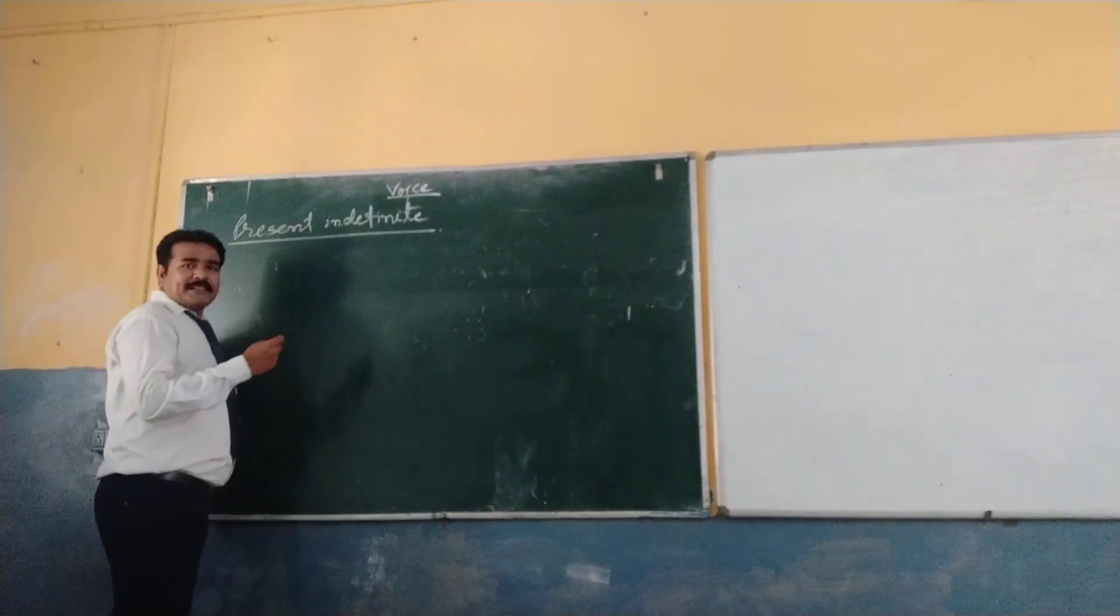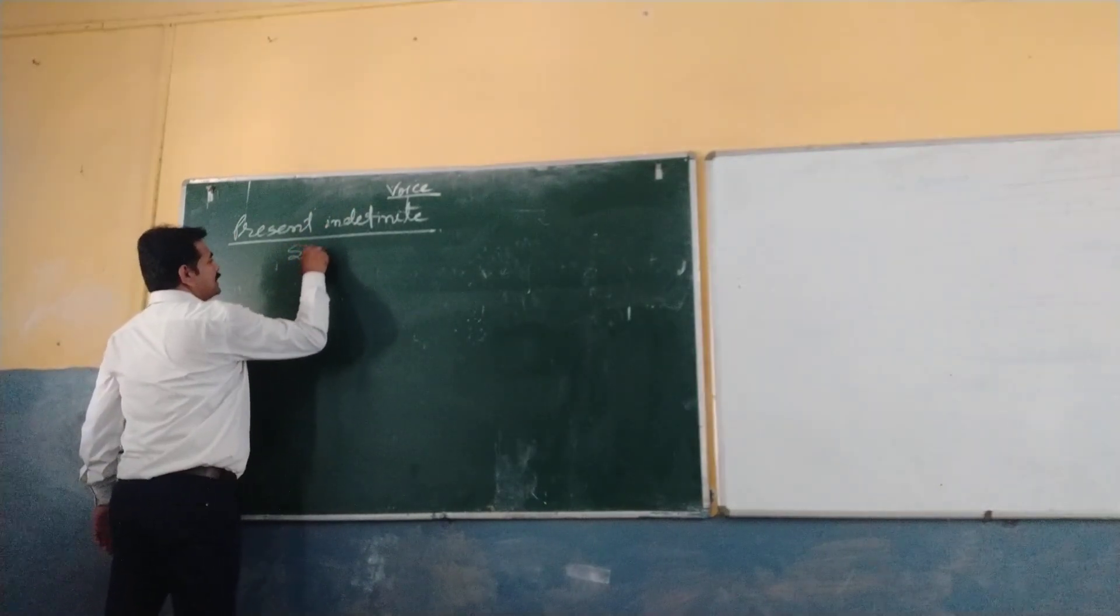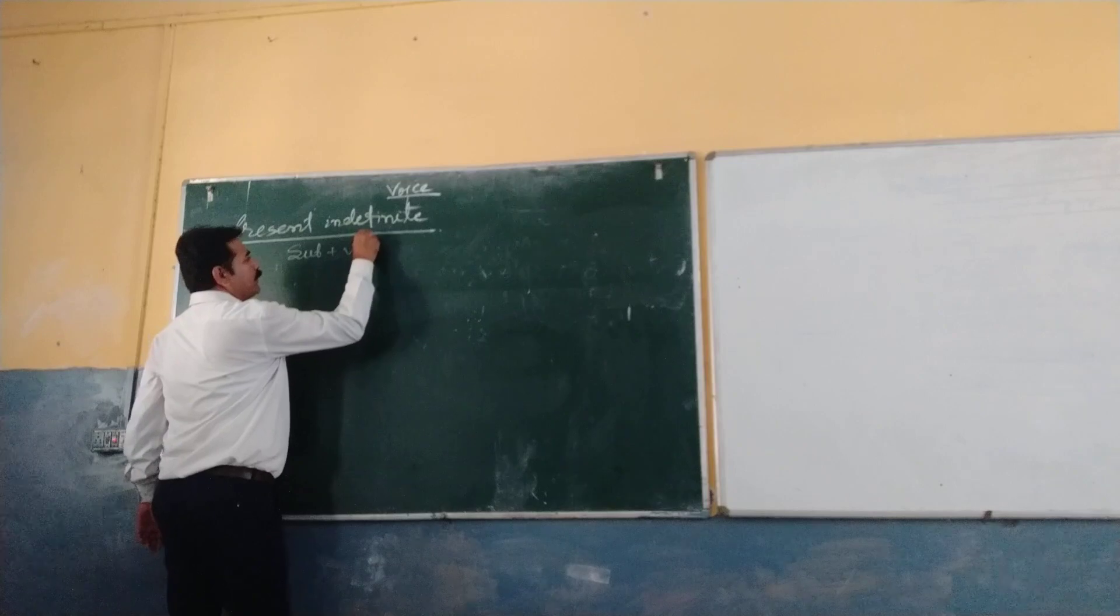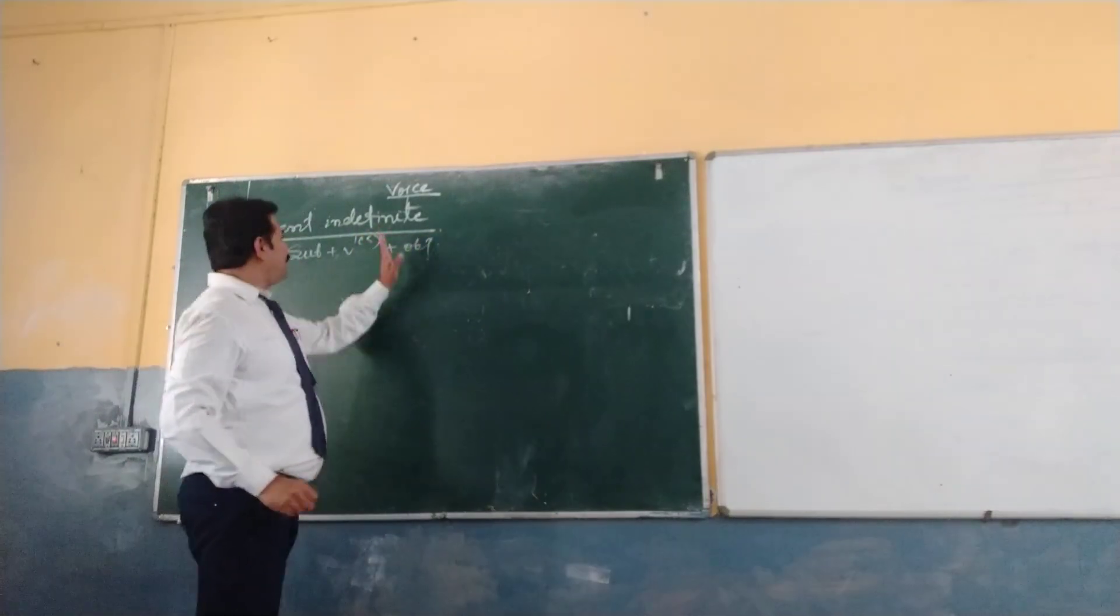Okay, let's see. So present indefinite: the active of present indefinite is subject plus V1, V5, as you know, that object. We have already learned.